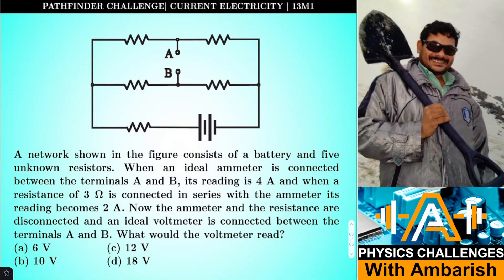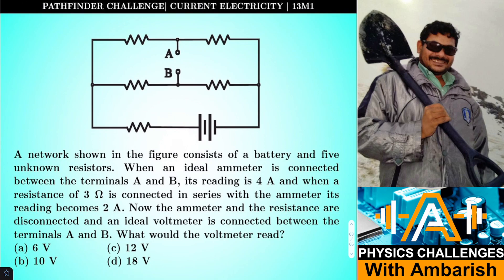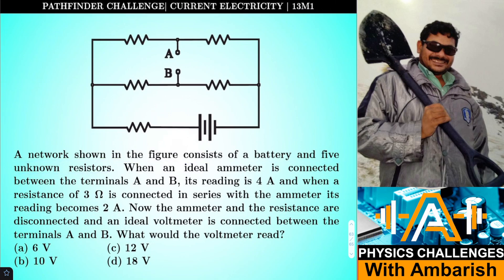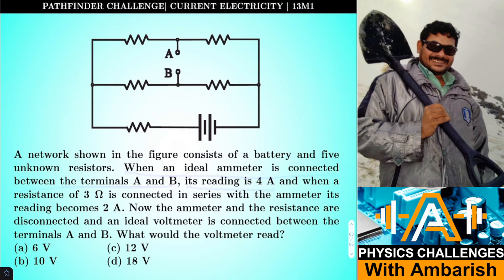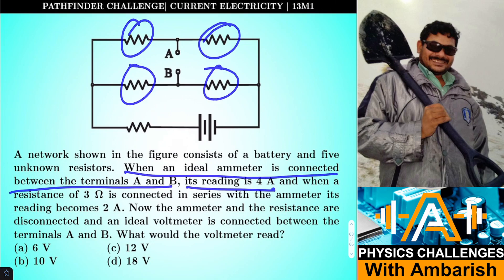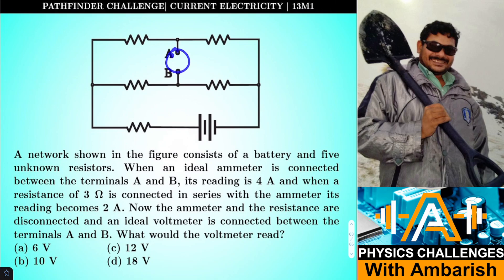A network shown in the figure consists of a battery and five unknown resistors. When an ideal ammeter is connected between terminals A and B, its reading is 4 Ampere. We don't know the values of these resistors, and when we connect an ammeter across A and B the reading is given as 4 Ampere.